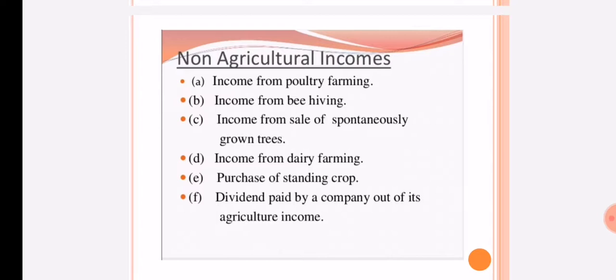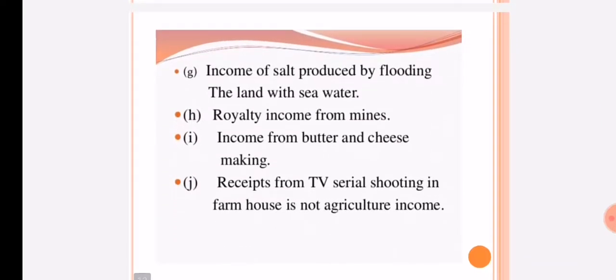Dividend income — when a company provides dividend from agricultural income, it is treated as non-agricultural income. Income from salt produced by flooding the land with sea water is non-agricultural income. Royalty income from mines is non-agricultural income. Income from butter and cheese making is non-agricultural income. Receipts from TV serial shooting in a farmhouse is not agricultural income.